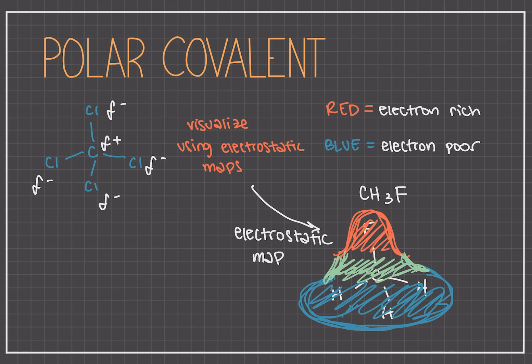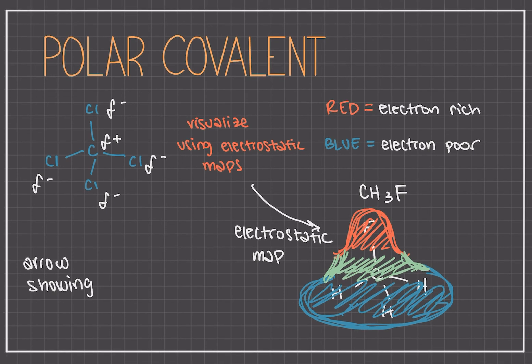This is a really good way of representing where the electrons are in an electrostatic map. We can also draw an arrow showing the electron-rich region, which is very useful. The arrow points towards the electron-rich region with a hash through the bottom of the arrow, representing the electron-poor region, which can be considered like a plus sign. So for our CH3F, we can draw it pointing up towards the F.